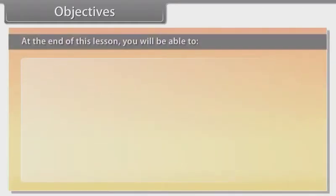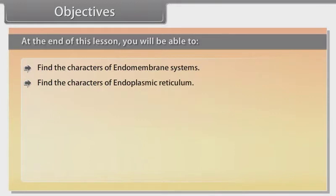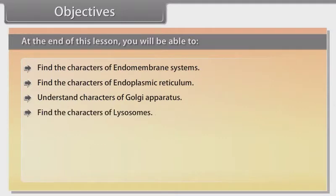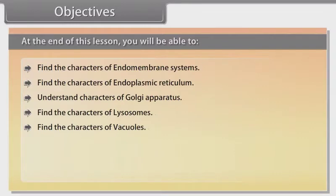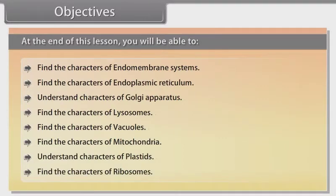Objectives: At the end of this lesson you will be able to find the characters of endomembrane systems, find the characters of endoplasmic reticulum, understand characters of Golgi apparatus, find the characters of lysosomes, find the characters of vacuoles, find the characters of mitochondria, understand characters of plastids, and find the characters of ribosomes.